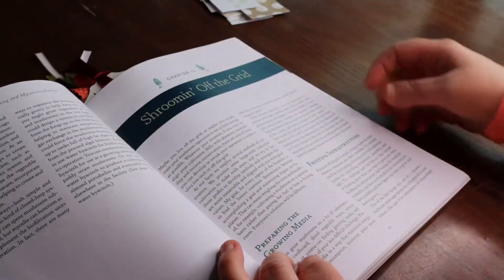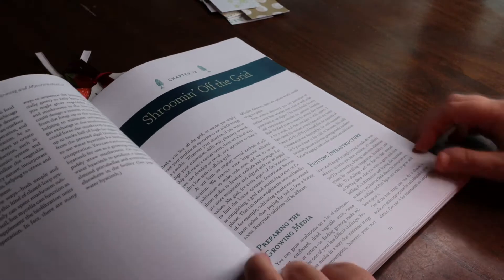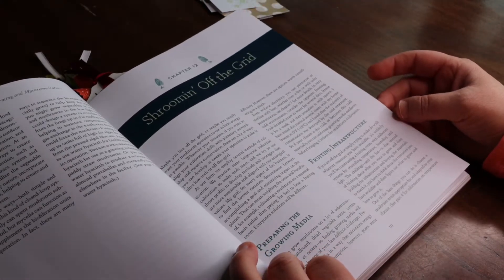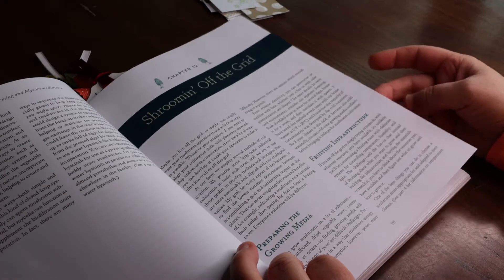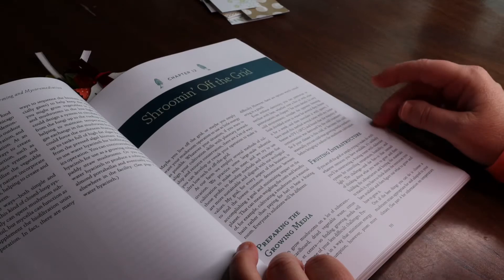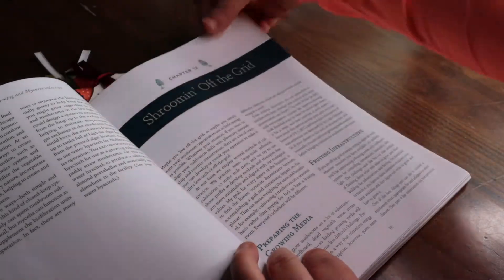Shrooming Off the Grid. Instead of pasteurizing or sterilizing, you can kill contaminants by freezing them. In case you live in a cold climate, this might be of interest to you. He explains how he tested it out. Very cool to know.